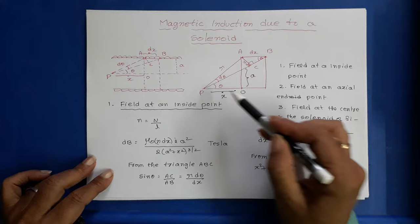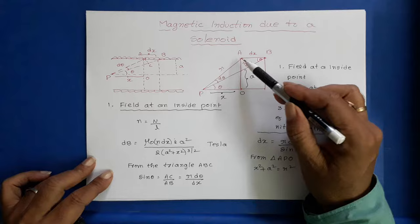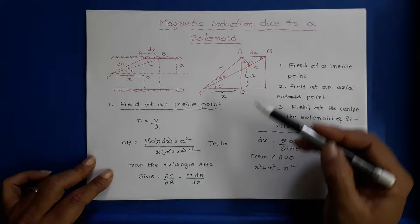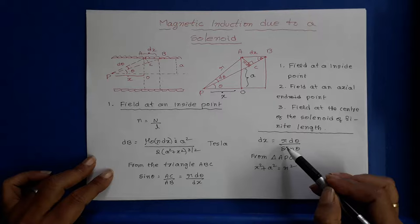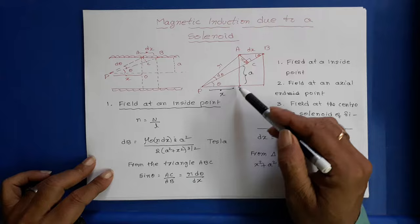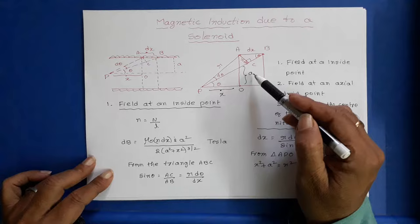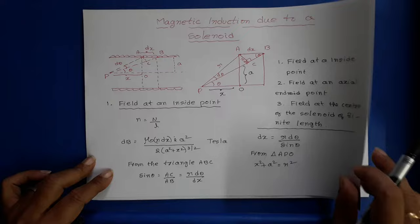Consider triangle ABC: if this angle is θ, automatically this angle will also be θ because these are parallel lines with a transversal. So sinθ = a/r, meaning dx = r·dθ/sinθ. From triangle APO, by Pythagoras theorem, r² = x² + a².